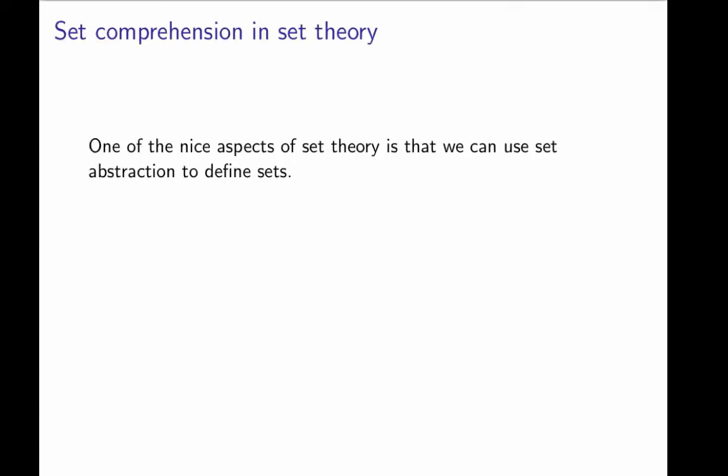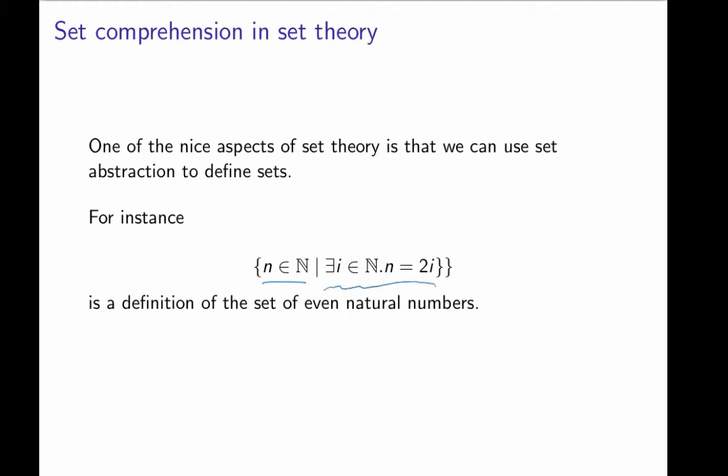And ranges are particularly useful when we speak of what's known as list comprehension. List comprehension is the Haskell version of something that we know from set theory, namely set comprehension. And it's one of the nice features of set theory, which is that we can use abstraction to define sets. For instance, if we want to define the set of even natural numbers, we can do this by writing the set of n in N which satisfy this condition, namely that there exists an i in N such that n is 2i.